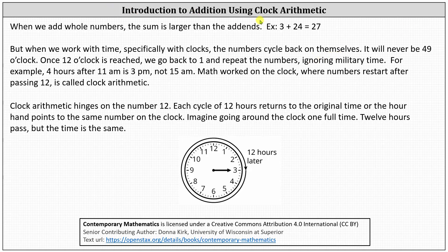Welcome to an introduction to addition using clock arithmetic. When we add whole numbers, the sum is larger than the addends. For example, when we sum 3 and 24, we get the larger number, 27.